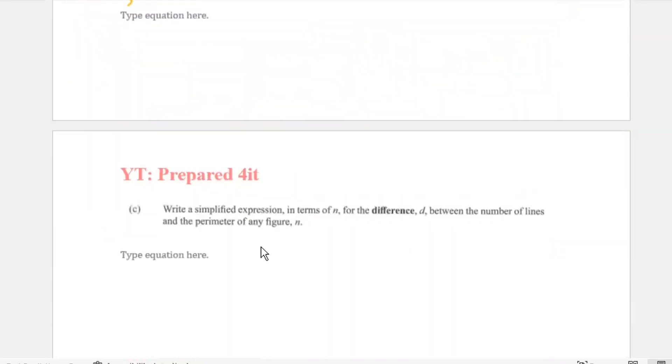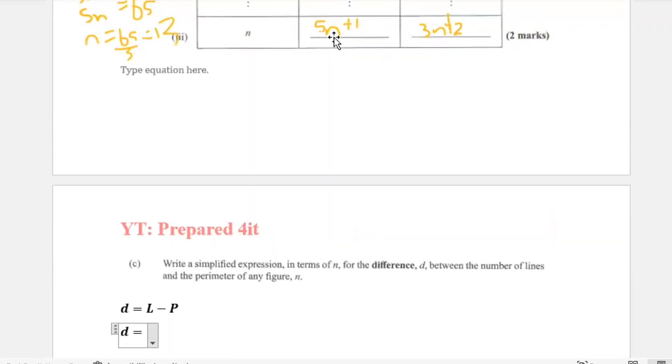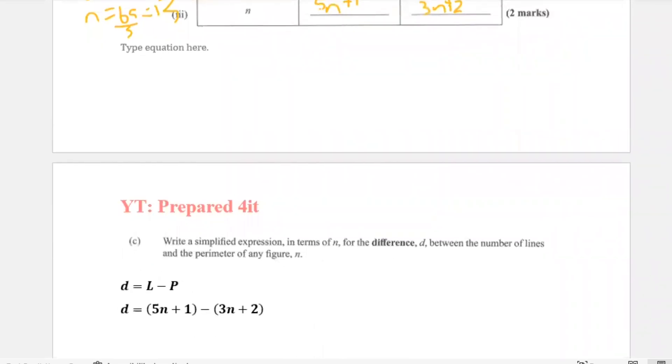So part c now says write a simplified expression in terms of n for the difference between the number of lines and the perimeter of any figure. They want us to write an expression in terms of n for the difference between the number of lines, which is L minus P. A lot of students didn't answer this last year, but the difference, remember the formula that we got for lines, it would have been 5n plus 1 minus P, which is 3n plus 2.